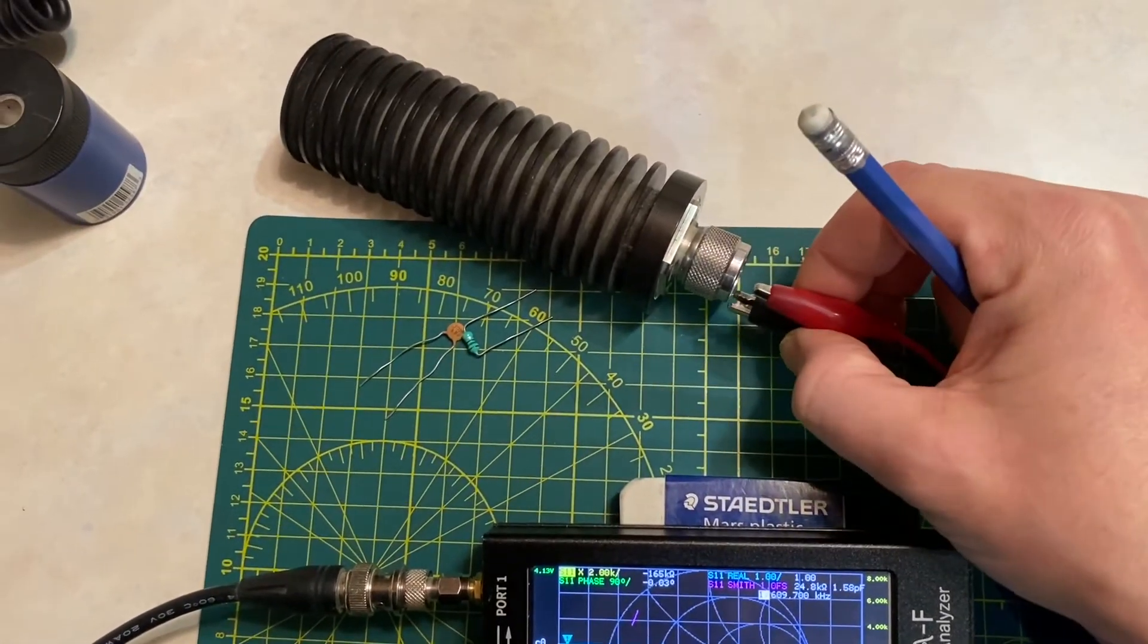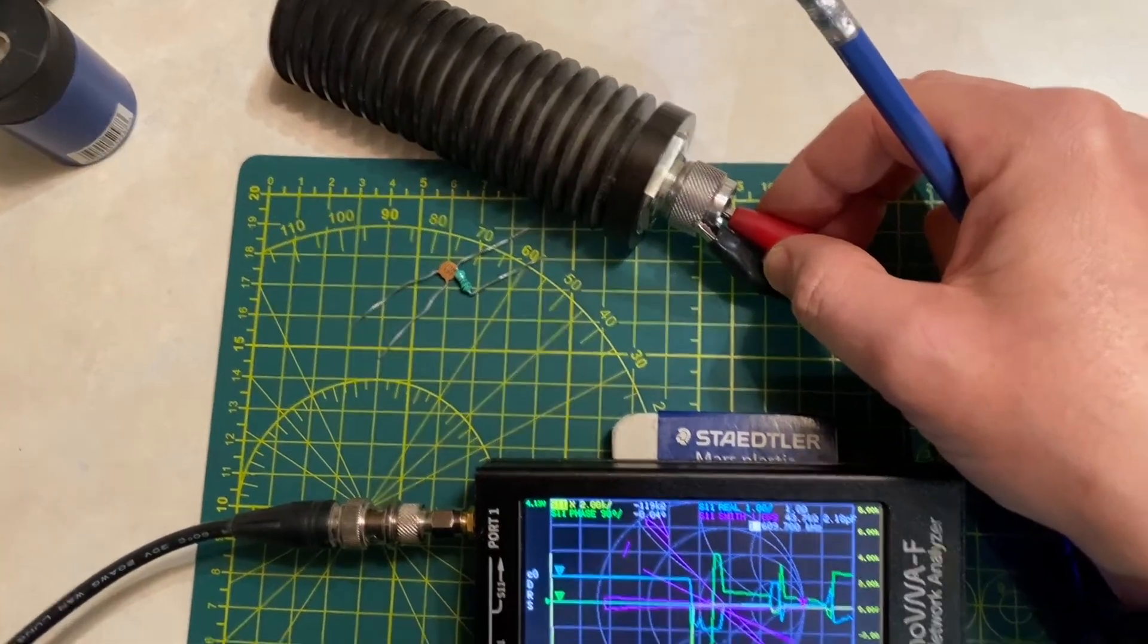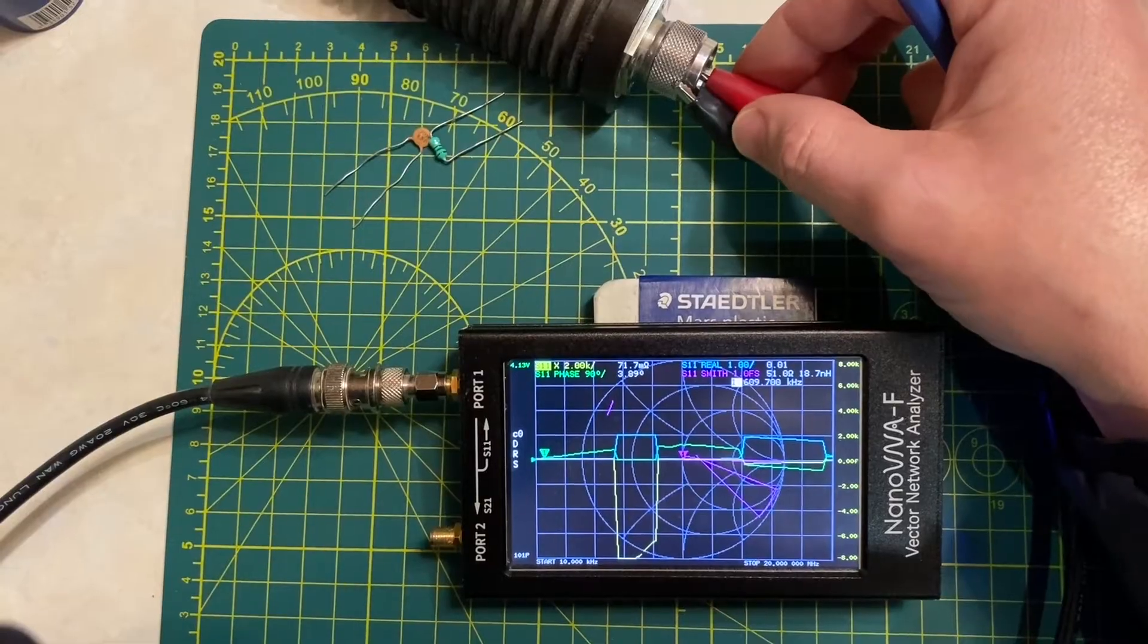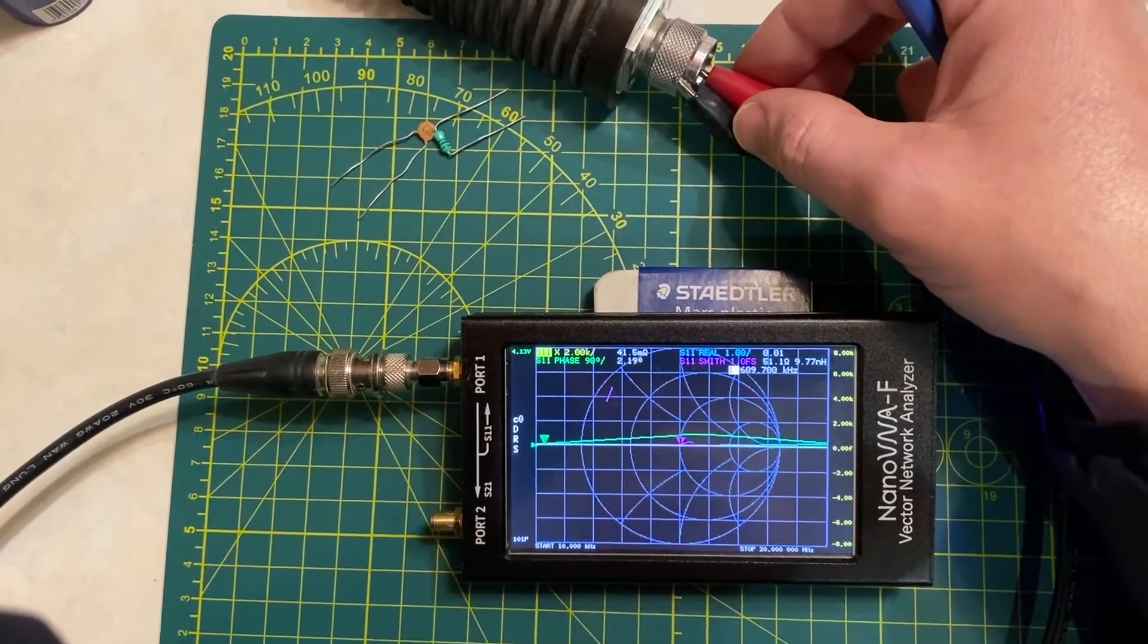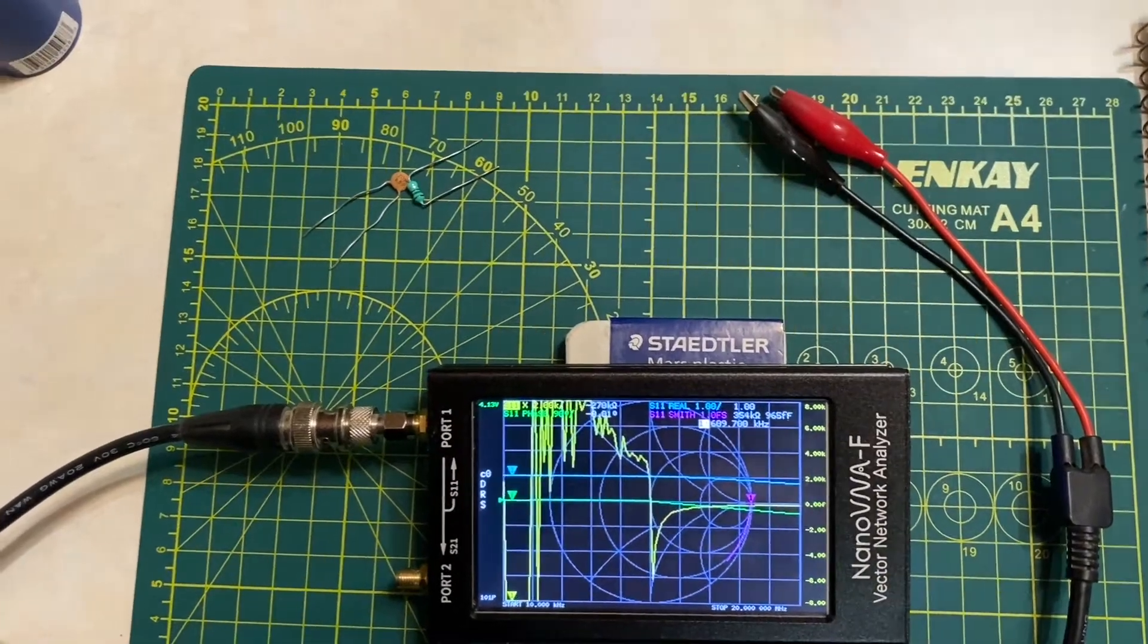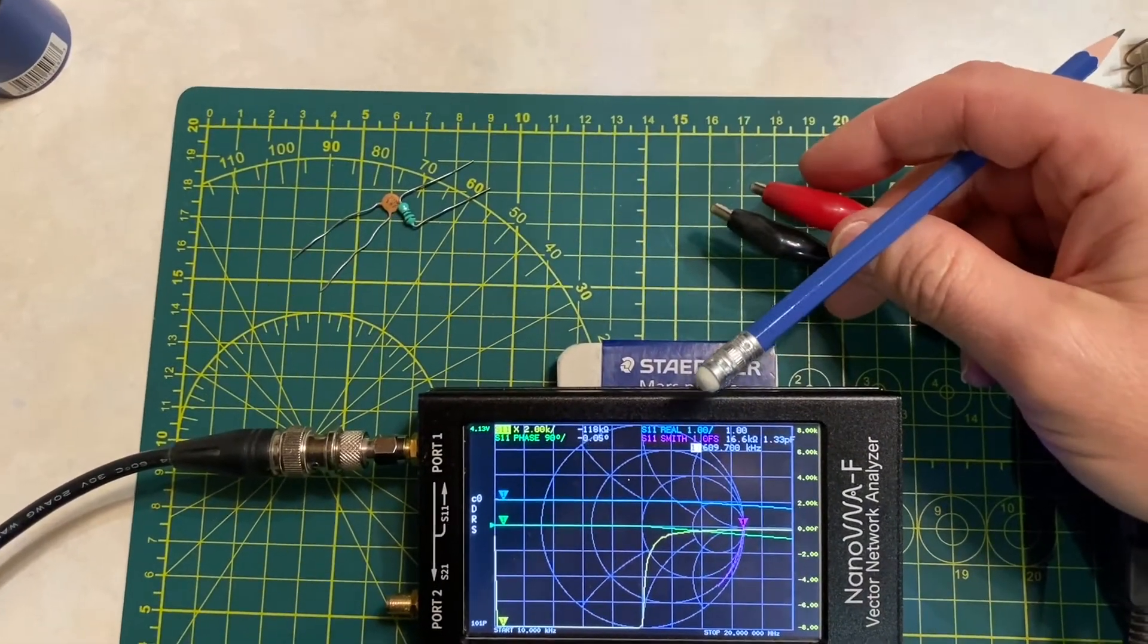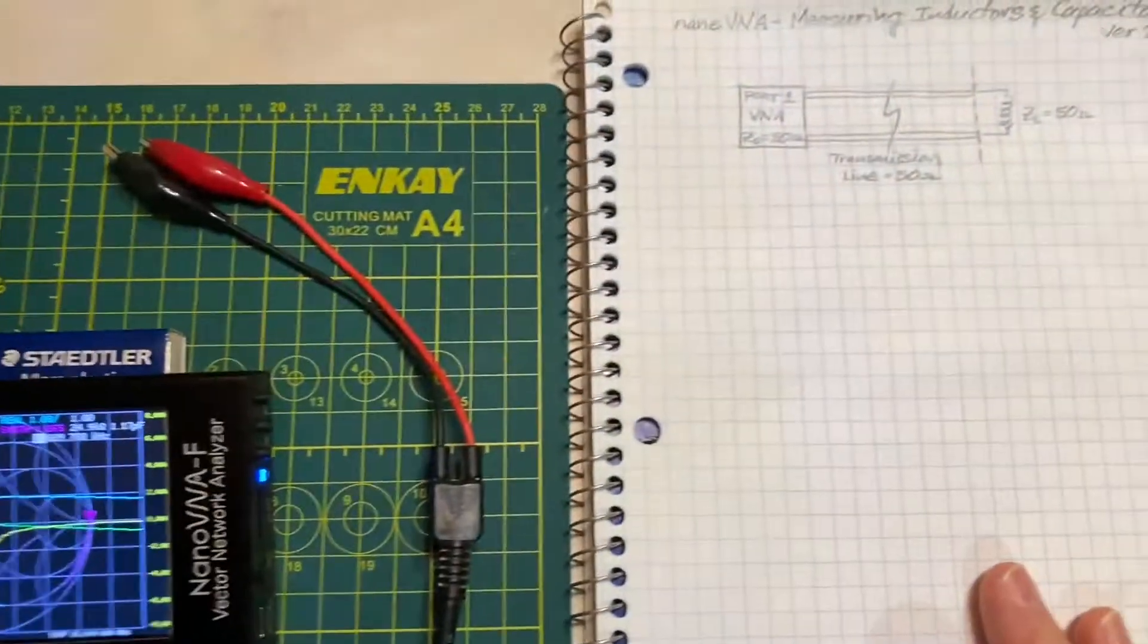For the load, I have an RF dummy load here, and I simply clip the black onto the outer ring. In the center, I hold that to the center pin, and believe it or not, as I hold that steady and it settles out, I'm able to get a fairly decent calibration at 50 ohms. I know you RF engineers out there watching this, it's probably going to make you cringe, but it works.